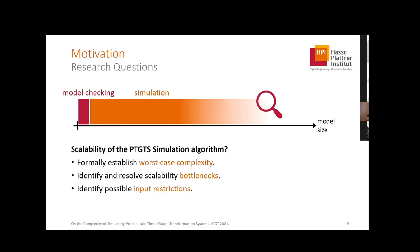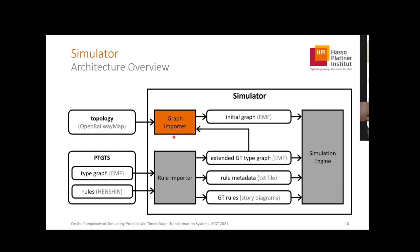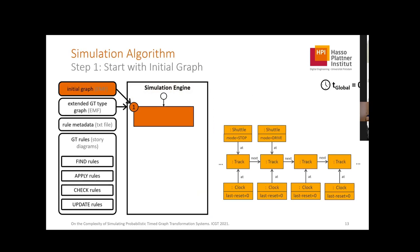Let's briefly look at our simulator architecture. It consists of three components: a graph importer that imports topologies from Open Railway Map and creates an initial graph; a rule importer that takes the probabilistic time graph transformation system modeled in Henshin and transforms it into simple graph transformation rules for simulation — presented in detail at last year's ICGT; and finally the simulation engine, which handles the algorithm.